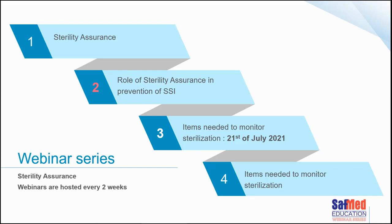In webinar one, we focused on sterility assurance — what it is and the concept and process involved. Today, being webinar two, we're going to look at the role of sterility assurance in the prevention of surgical site infections. Webinars three and four will look at consumables and items we can use to monitor steam sterilization or all types of sterilization. Webinar three will be hosted on the 21st of July at the same time. Thank you for joining us today.